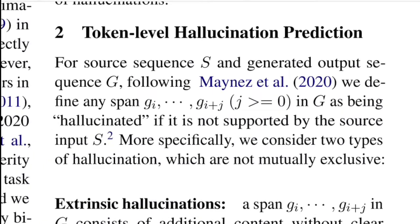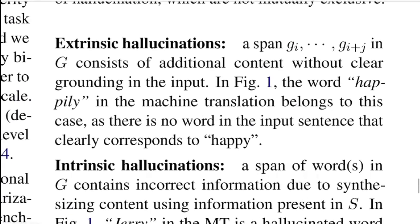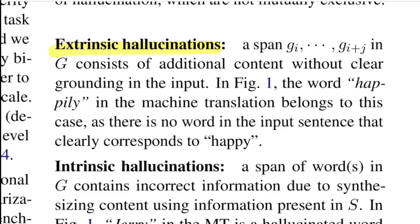As discussed earlier, they do a token-level prediction saying whether a token is hallucinated or not. Consider a source sequence S and the output it generates G — there will be some subsequence G_i to G_j within G that is hallucinated. They define two types of hallucinations: extrinsic hallucination and intrinsic hallucination, as shown in the figure.